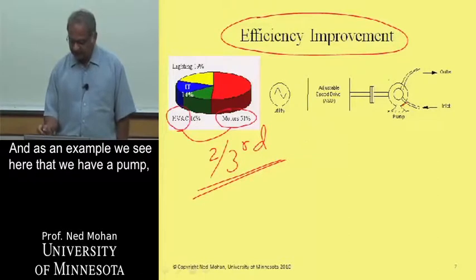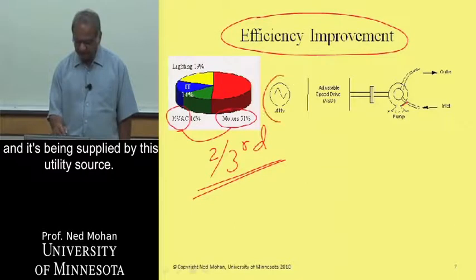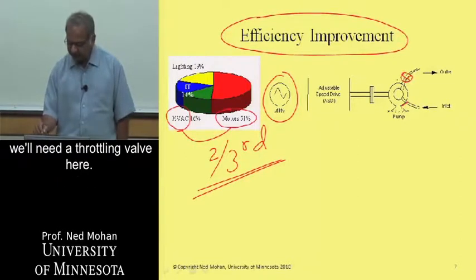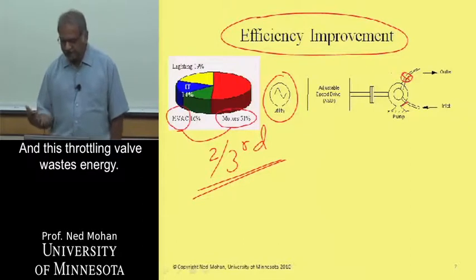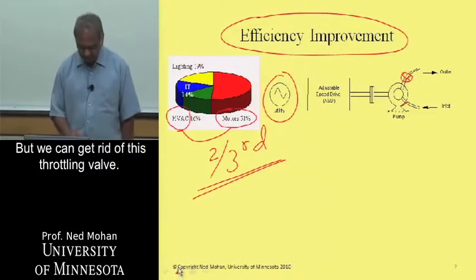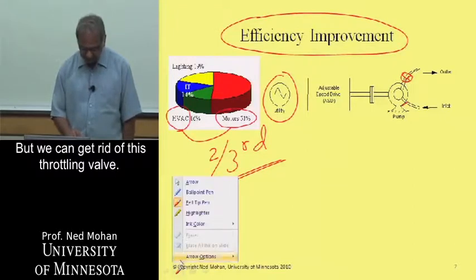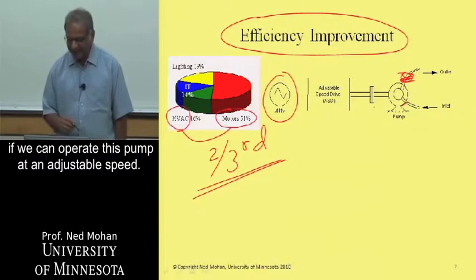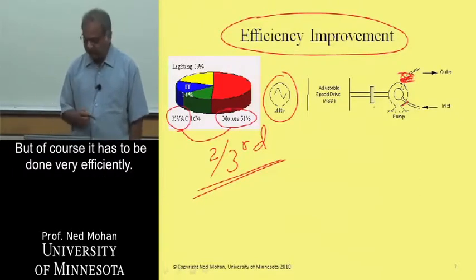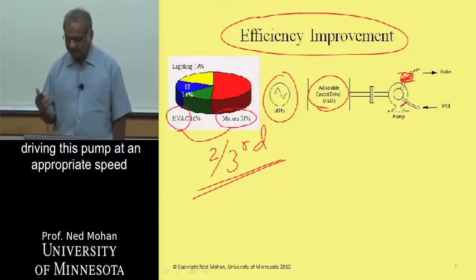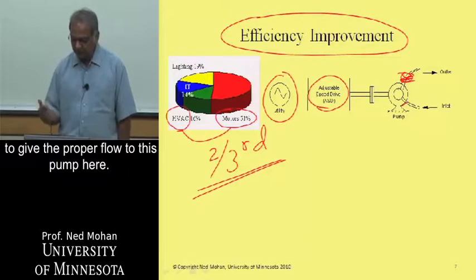As an example, we have a pump being supplied by a utility source. If we want to control the flow rate through this pump, we need a throttling valve, and this throttling valve wastes energy — that would be the case if this pump was being driven at a constant speed. But we can get rid of this throttling valve if we can operate this pump at an adjustable speed, done very efficiently, to give the proper flow through this pump.